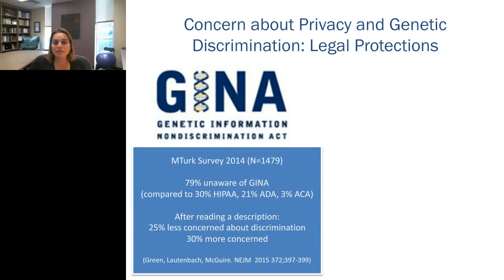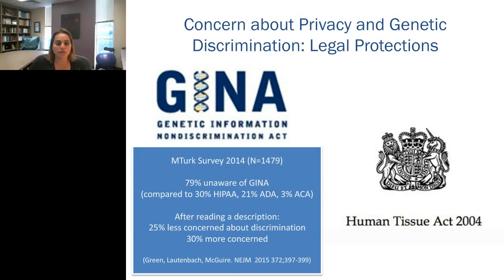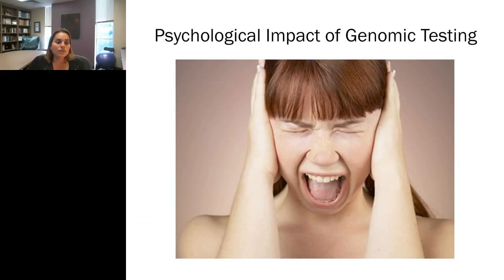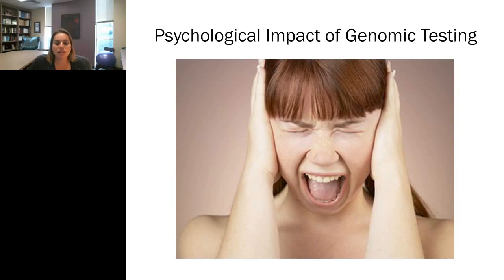Other countries have more extensive legal protections for genetic discrimination. One example is the Human Tissue Act of 2004, which actually criminalizes the use of DNA for analysis without explicit consent in most circumstances — a much stronger protection against the use of genetic information without consent. Turning to the second concern from our decliners — the potential psychological impact of genomic testing — there is also a lot of concern about what the risks of integrating whole genome and whole exome sequencing into clinical care might be from a psychological perspective.